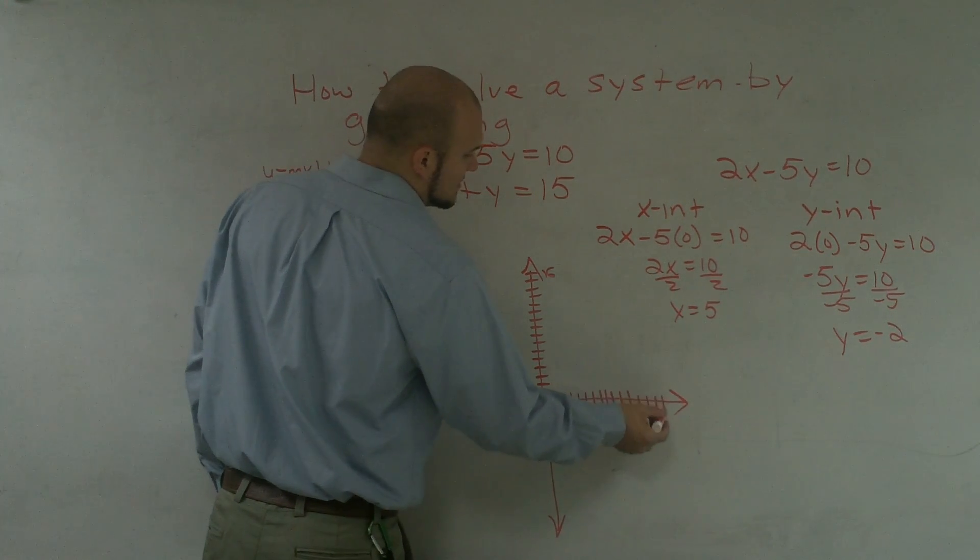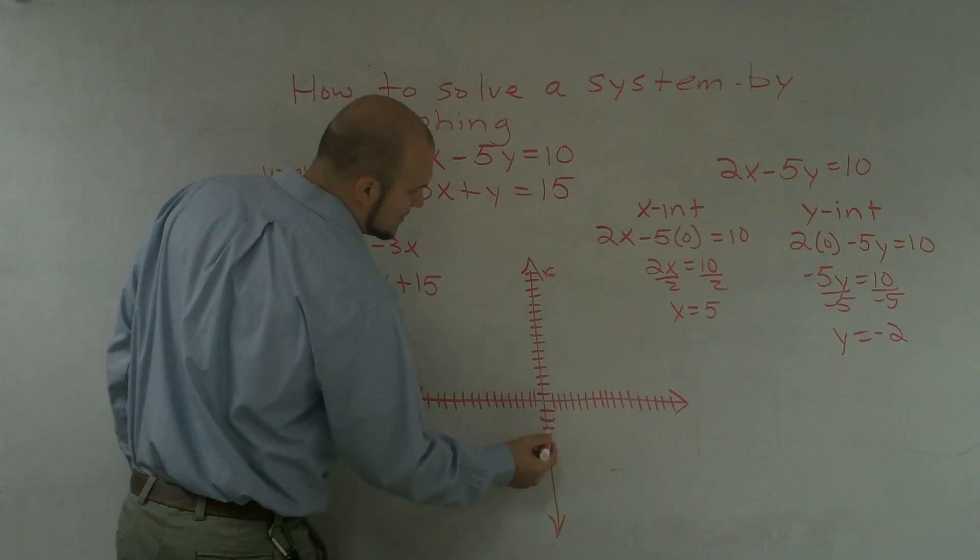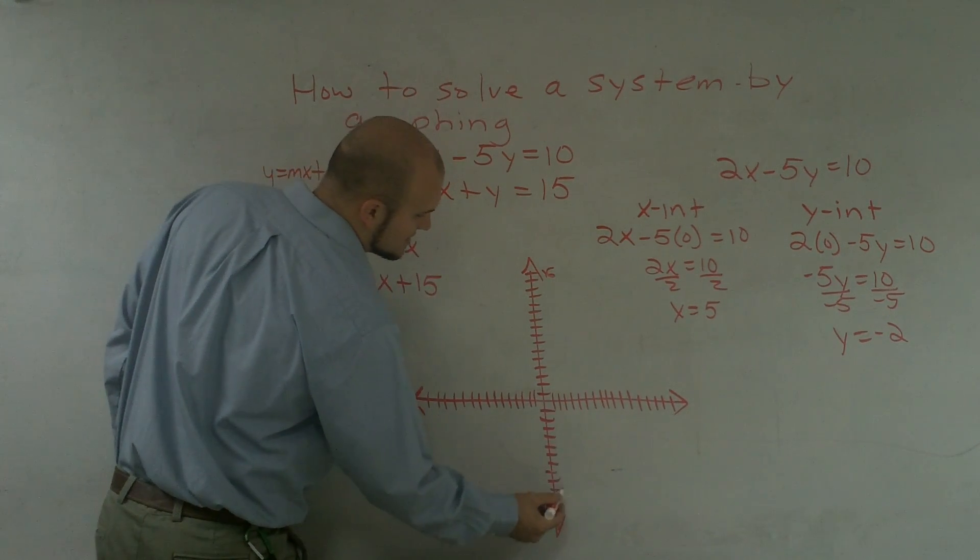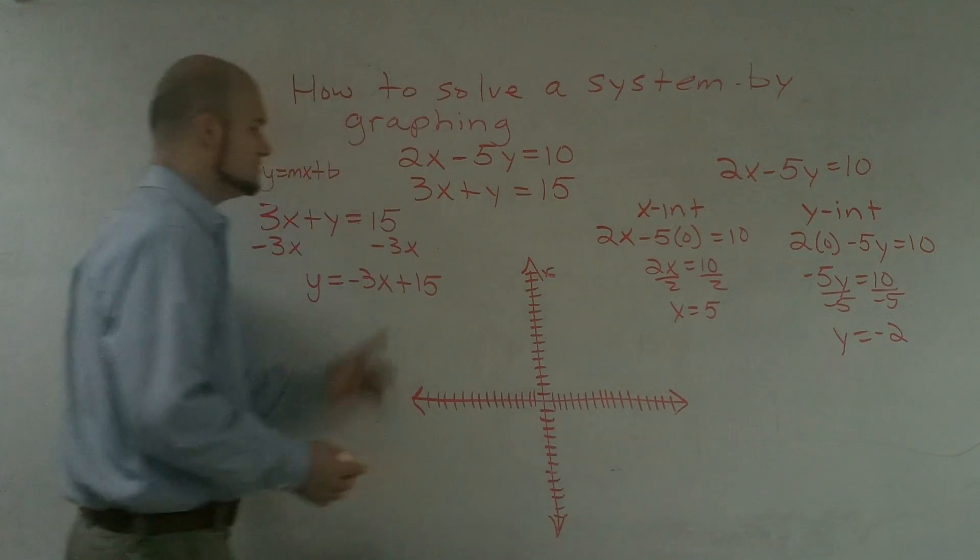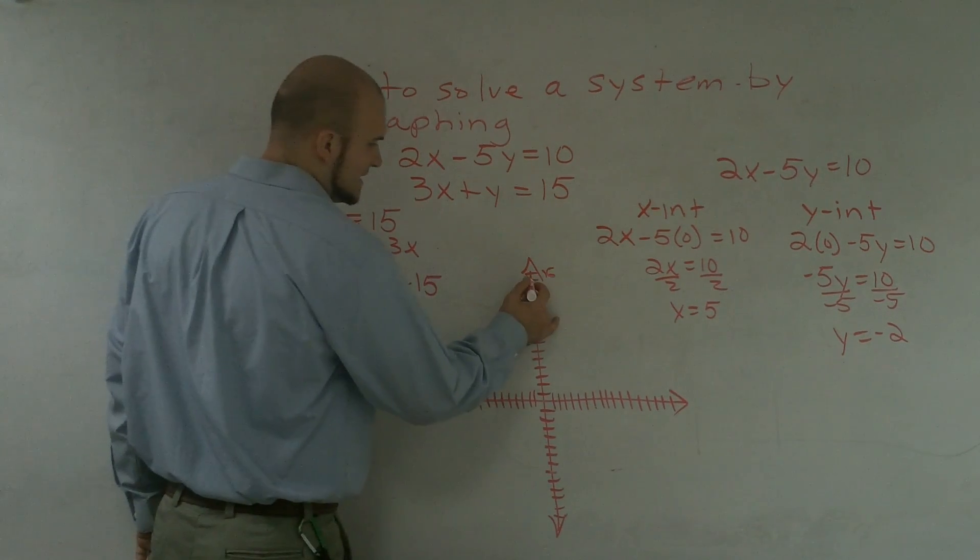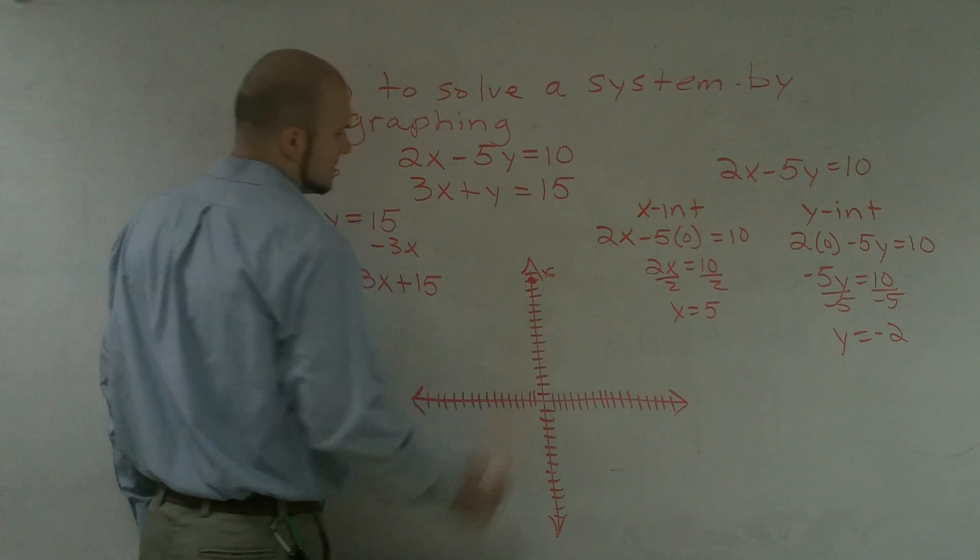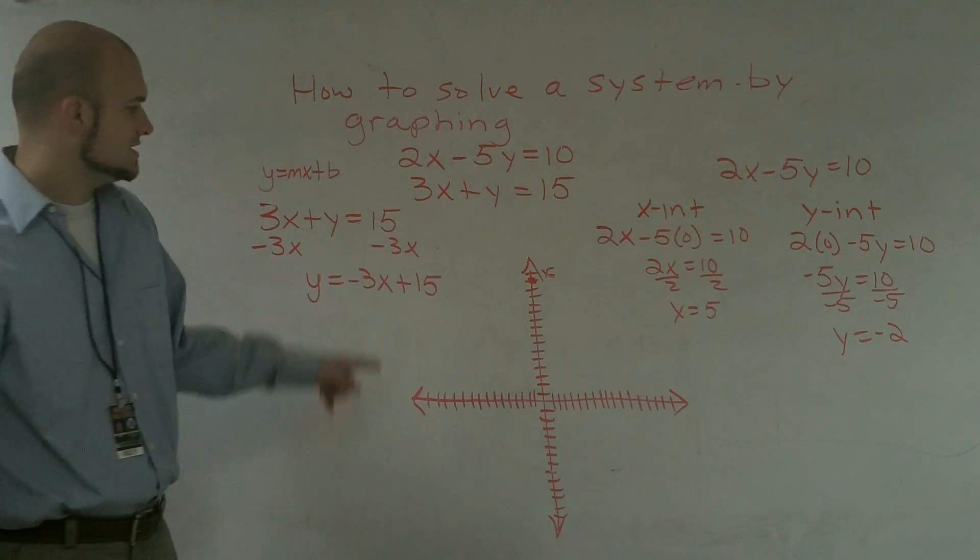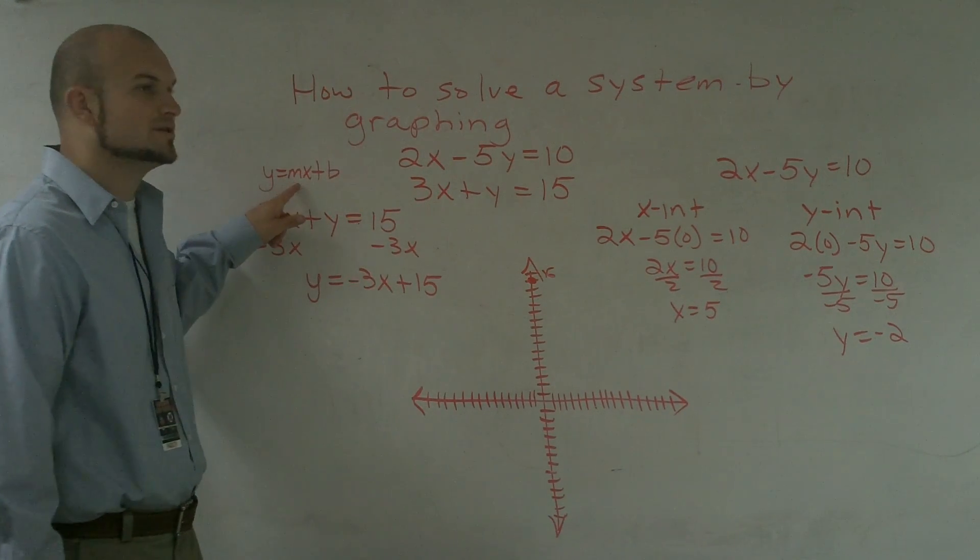And a quick reminder, when you're solving with the slope-intercept form, what you want to first do is find the y-intercept, which is our b. So I'm going to go all the way up to 15. And then, the next thing is, you're going to want to find your slope. And my slope is our m. And notice, our slope here is a whole number.